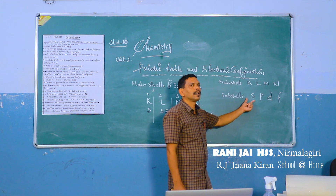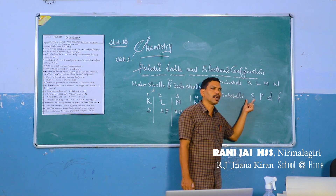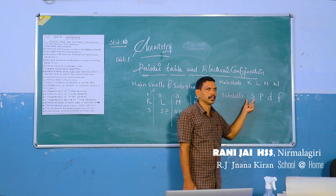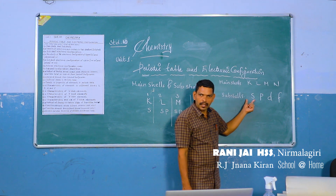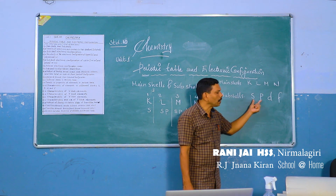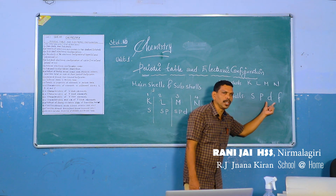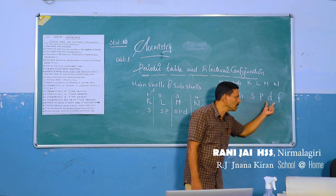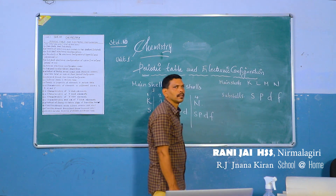The name of the S sub-shell comes from the word 'Sharp.' P stands for 'Principal.' D stands for 'Diffuse,' and F stands for 'Fundamental.' These are the origins of the sub-shell names S, P, D, F.